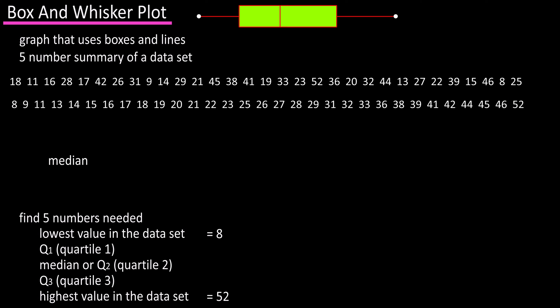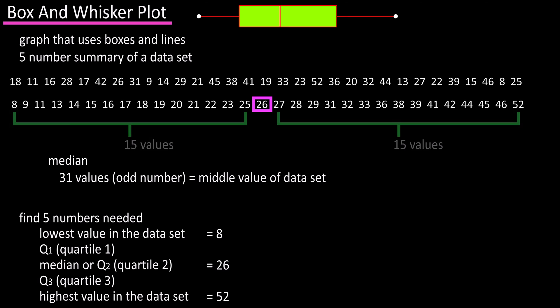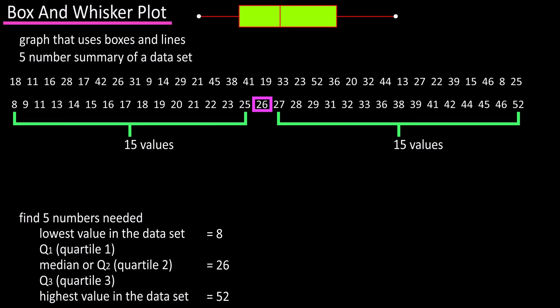Next we need to find the median. It will be the middle value — here, 26 — with 15 values to the left and 15 values to the right.